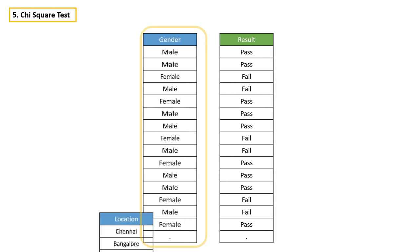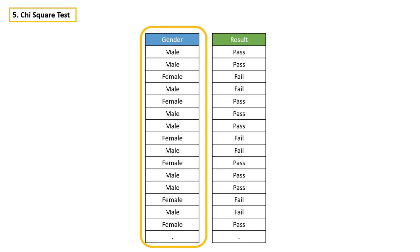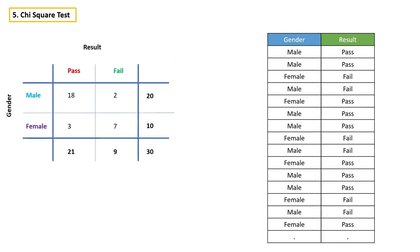Let's say we want to know whether there is any relationship between gender and result. Let's see how chi-square can help us in this scenario. These are the actual values which we have — in chi-square, we call them observed values. In any statistical analysis, the very first step will be to formulate the hypothesis.